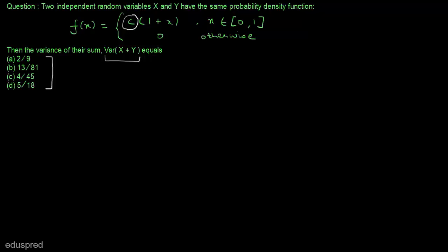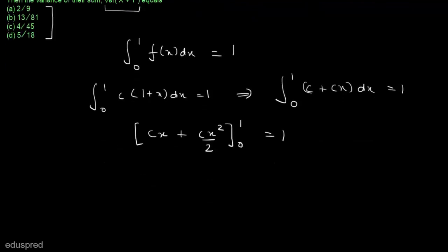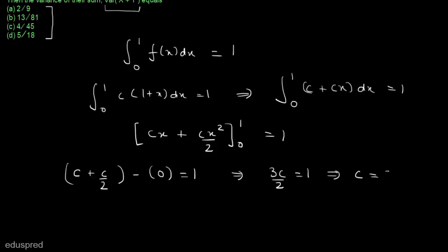For this function to be a legitimate probability density function, the integration of f(x) dx from 0 to 1 should be equal to 1. This implies that the integration of c multiplied by (1 + x) dx from 0 to 1 should equal 1, which means the integration of (c + cx) dx from 0 to 1 equals 1. Integrating, we get cx + cx²/2 evaluated from 0 to 1 equals 1, giving us c + c/2 = 1, so 3c/2 = 1, and therefore c = 2/3.